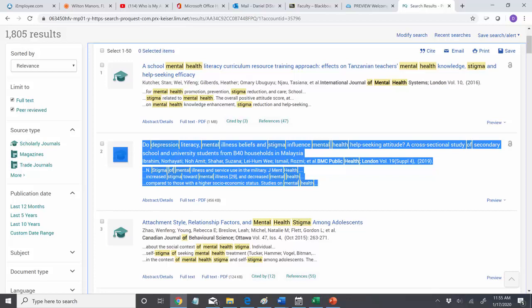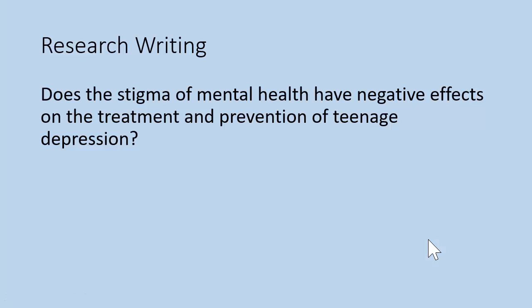And we see this: 'Do depression literacy, mental illness beliefs, and stigma influence mental health-seeking attitudes across a study of secondary school and university students?' Now we've gotten something that can bring us to the research question: 'Does the stigma of mental health have negative effects on the treatment and prevention of teenage depression?' We now have a research question we can explore, look at different positions and attitudes, begin to form our own opinion, take our own position, and approach a thesis with an argument in mind.